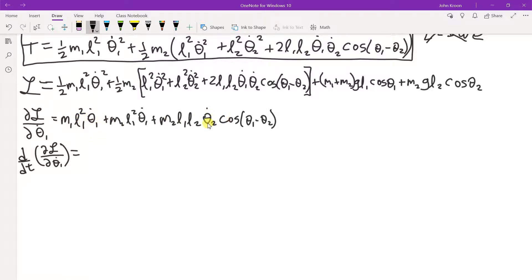Like for this term here, you'll have a theta 2 double dot times cosine theta 1 minus theta 2. Then you'll have a theta 2 dot, so you'll add to that. It'll be plus theta 2 dot, and then the derivative of this guy. And then even the chain rule, the derivative of the interior, or rather the argument of this.